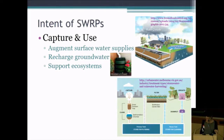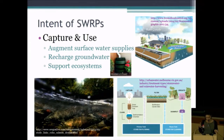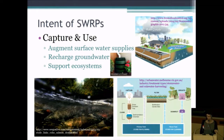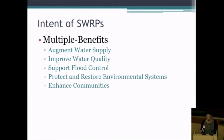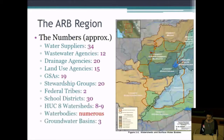We should not forget that we can capture and use stormwater to support ecosystems for the needs and interests of our original residents. The final phrase is multiple benefits, which comes down to five categories: augment water supply, improve water quality, protect and restore environmental systems, and enhance communities — keep all those in mind as we move forward.